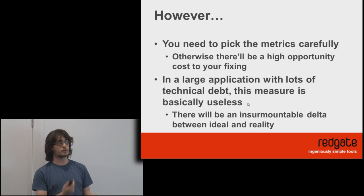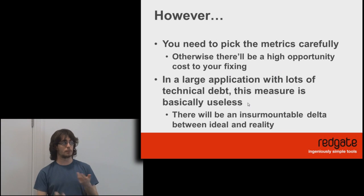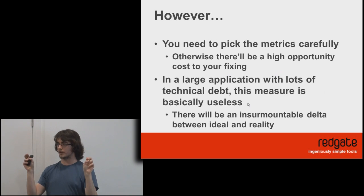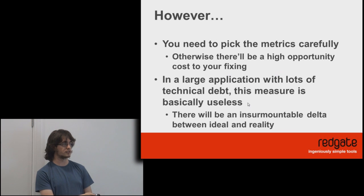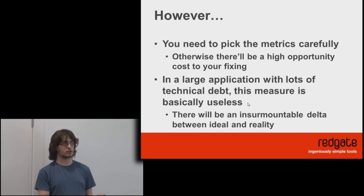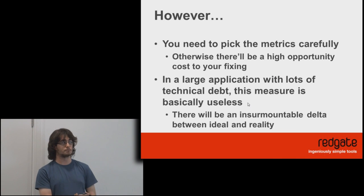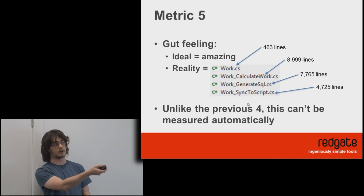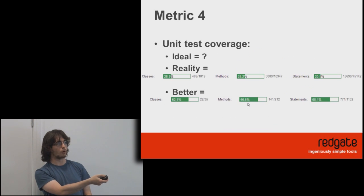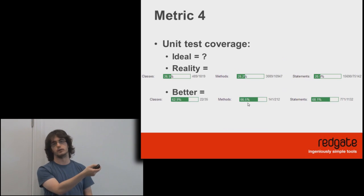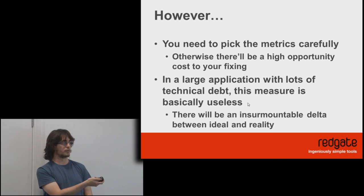Basically, you have to choose metrics carefully, otherwise there'll be a high opportunity cost of fixing that metric — like the compile warnings example. And in a large application with a lot of technical debt, this measure is basically useless, because you'll end up with something insurmountable to deal with, or your unit test coverage will be basically zero and it's just insurmountable.